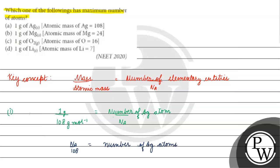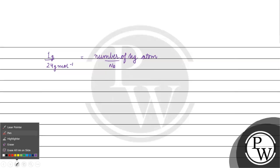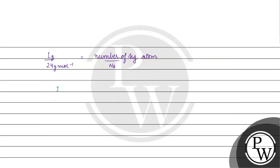If we talk about magnesium, we have 1 gram of magnesium. So 1 gram divided by 24 gram per mole, multiplied by Avogadro's number, gives us the number of magnesium atoms — that is (1/24) × Nₐ.